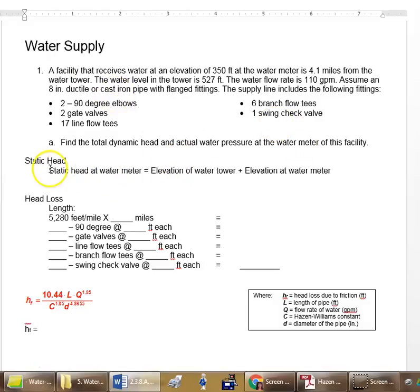Okay, so the first thing we need to do is find the static head. You'll remember the static head is the elevation of the water tower minus the elevation of the water meter. So that's just the water level here minus that. Calculate that.